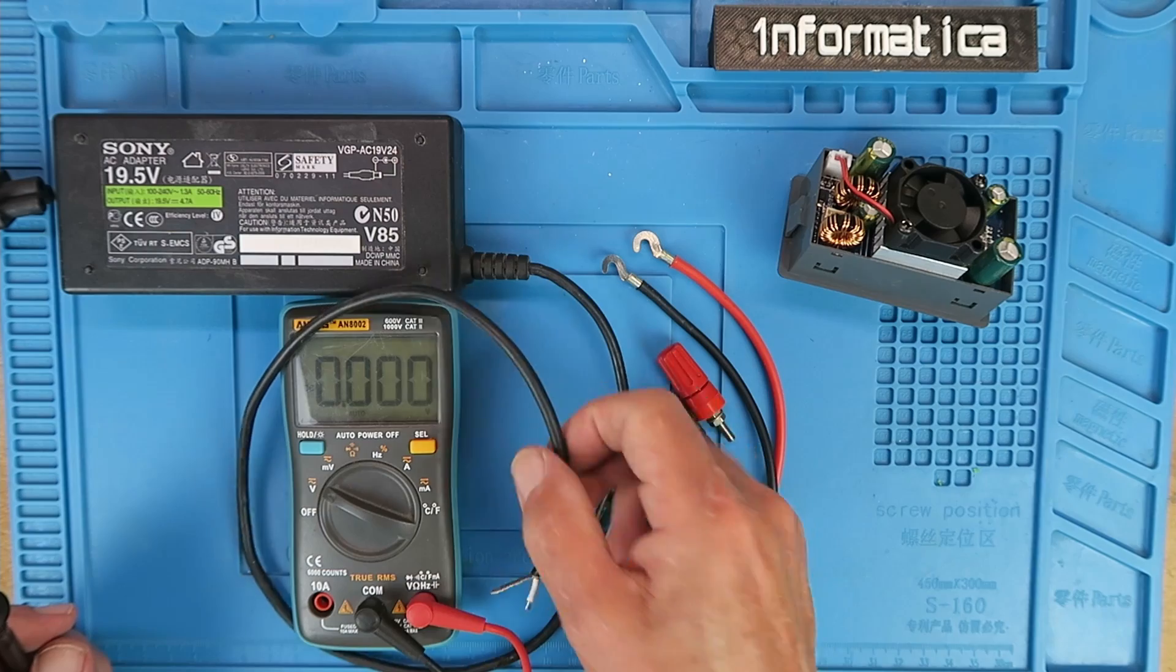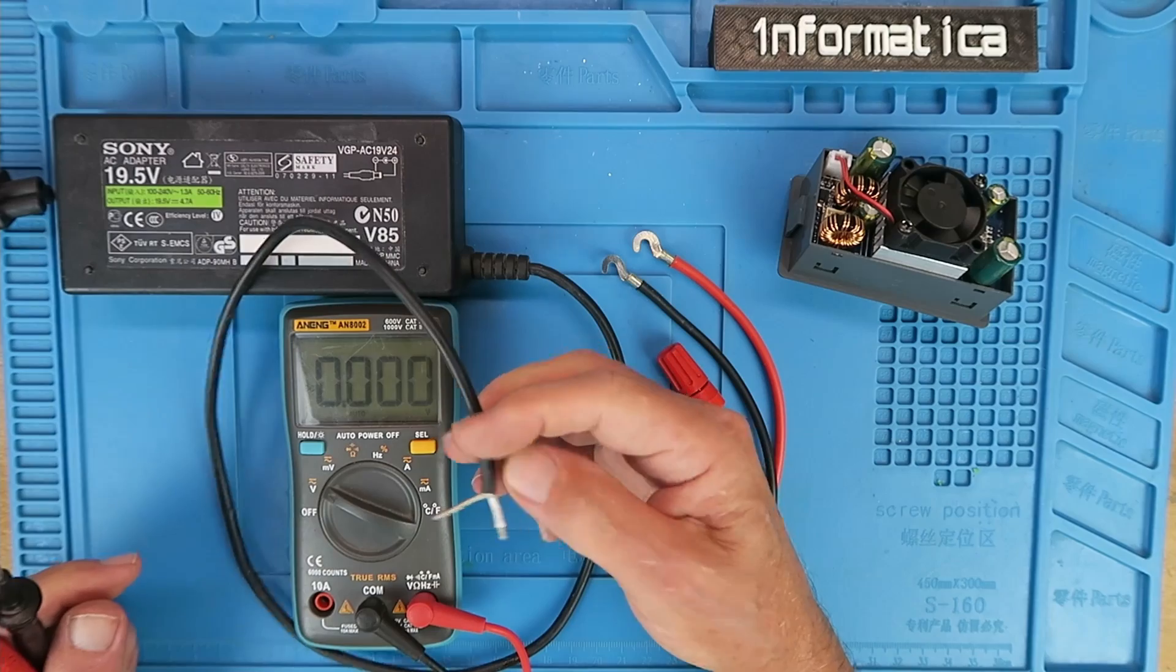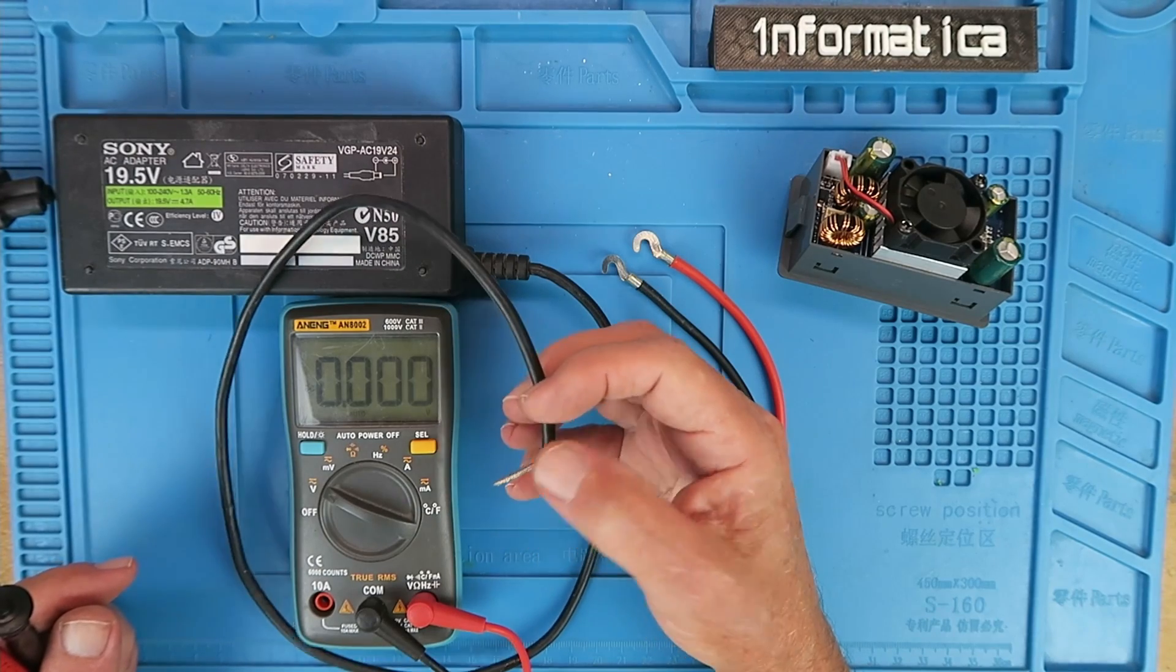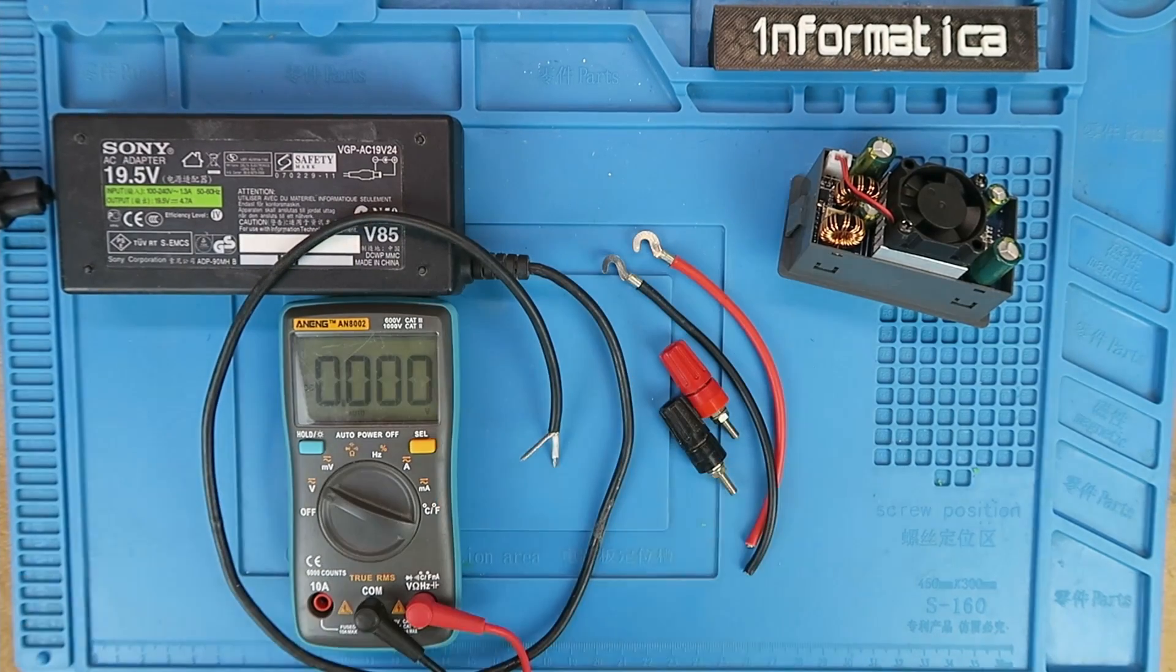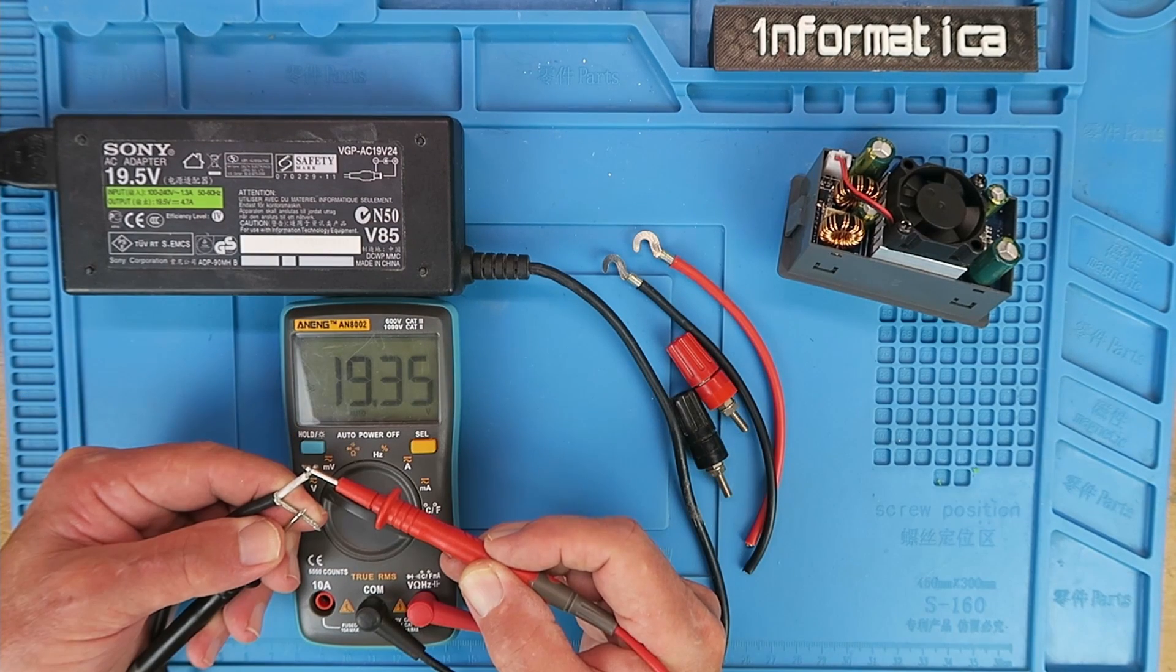Let's just check what the polarity is of the power supply unit. The convention would be that this would be positive and the outer screen negative, but one never knows. Outer screen then. And yes, the inner is positive and there we can see our 19.35 volts.